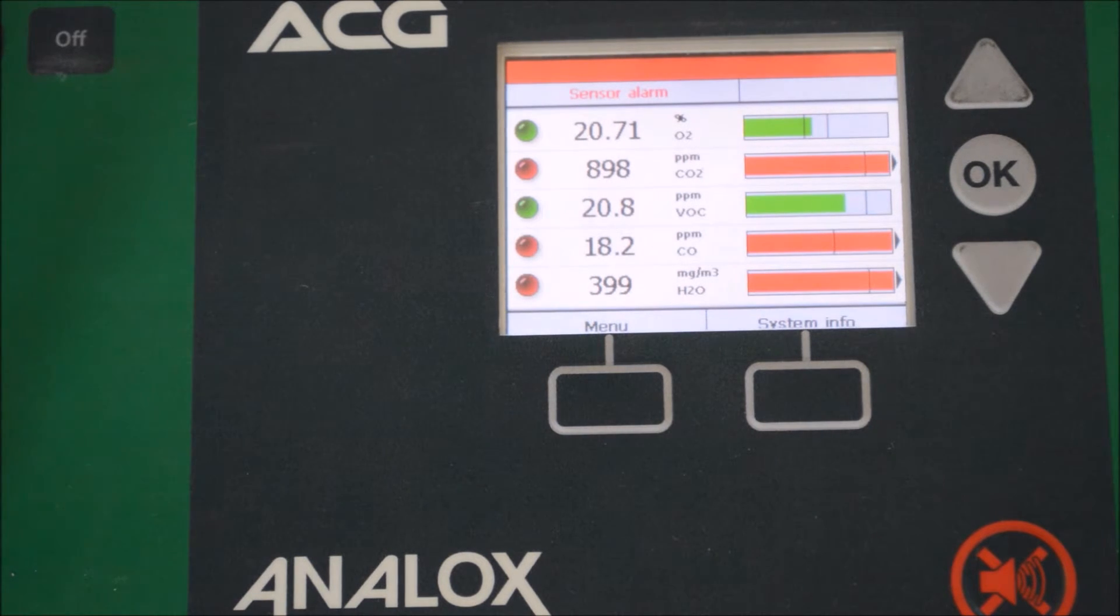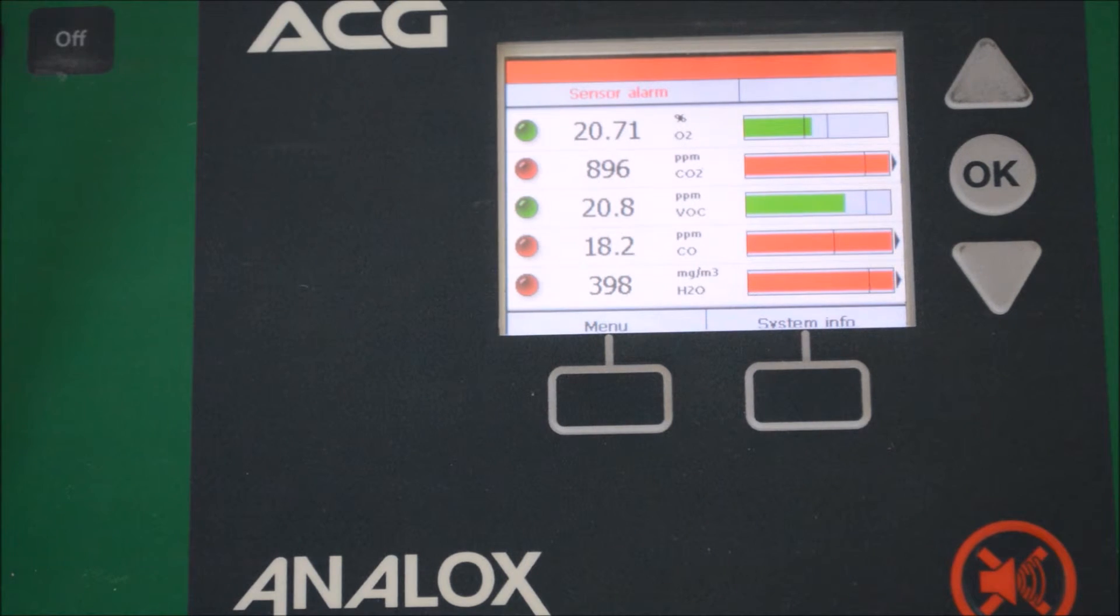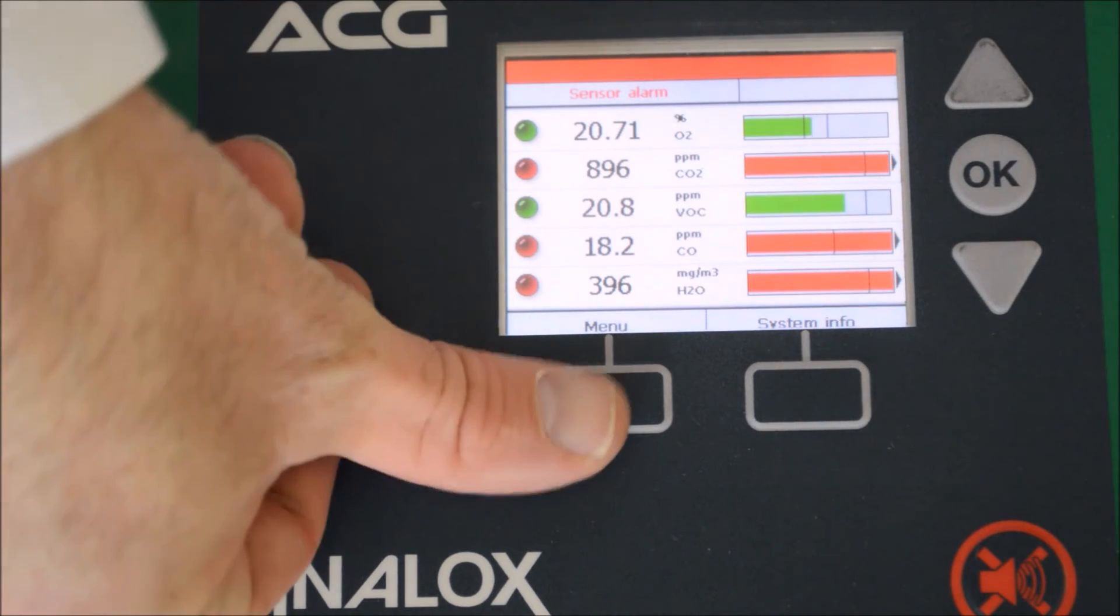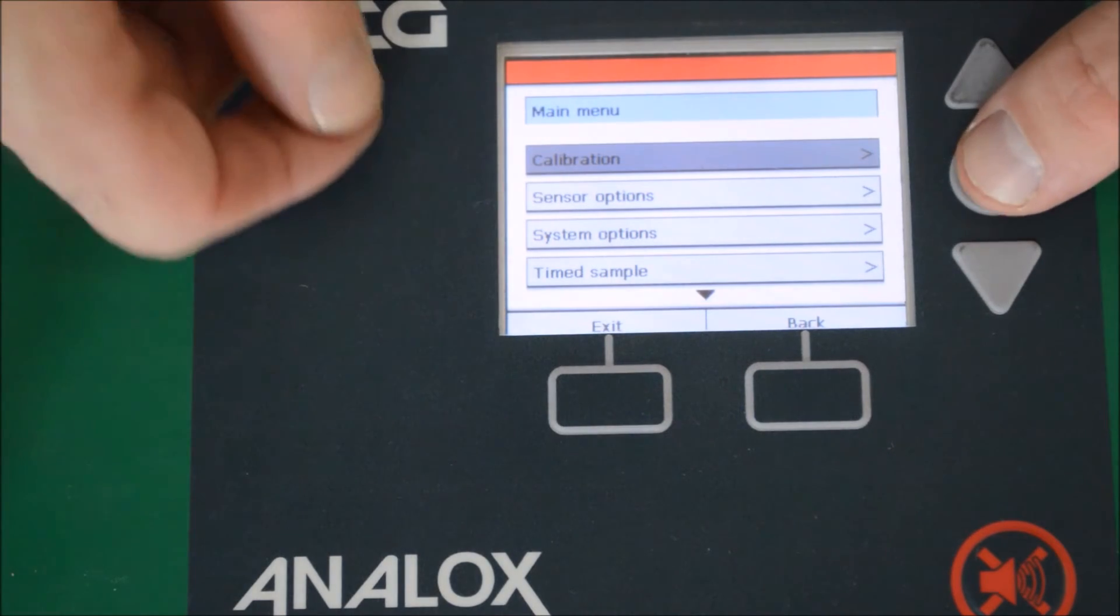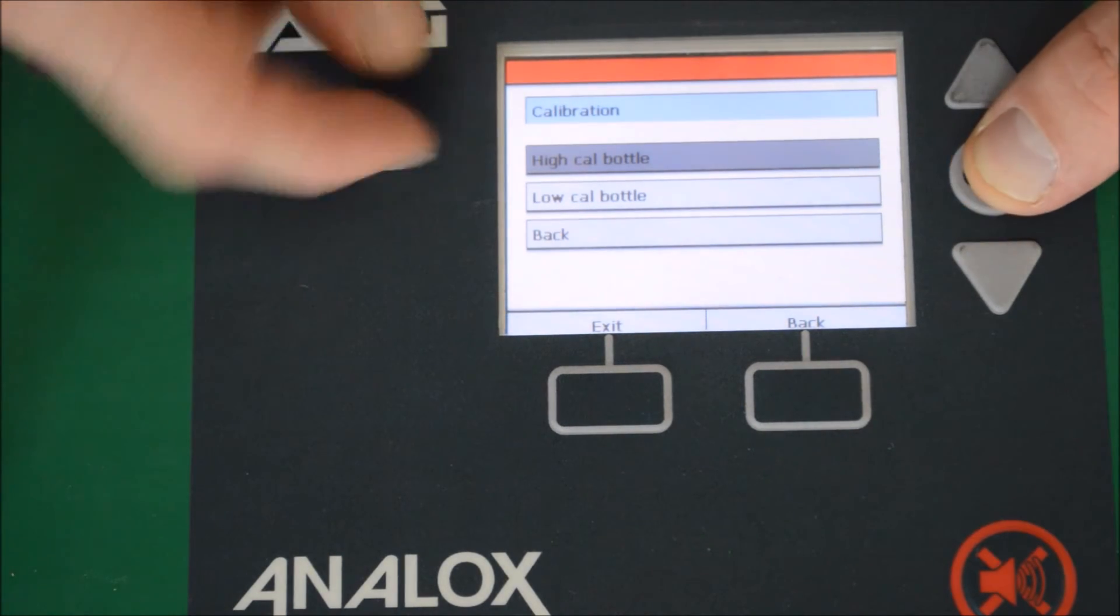We're now calibrating with the span gas. We've had the span gas running over the sensors for five minutes now, and as you can see the readings are stable. So we need to enter the menu, enter calibration, and this time we're calibrating with a high-cal gas bottle.